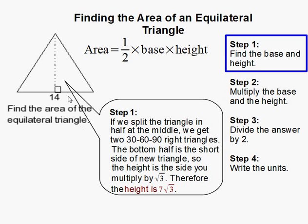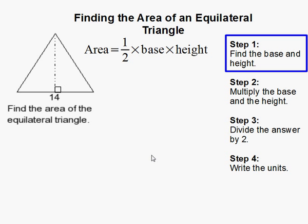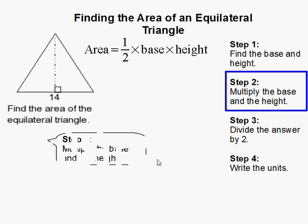And I get the 7 from half of this base here. So this height is 7 root 3. This base is 14. So then we simply multiply the base and the height. Remember the base is 14, 7 root 3 is our height. That gives me 98 root 3.